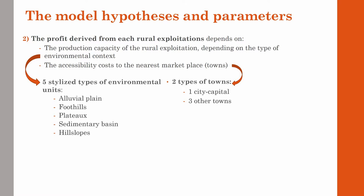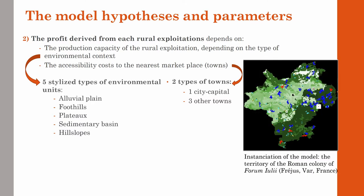Therefore, in the model the aristocrats must have at least one exploitation within a radius of 10 km from the capital. In order to define and calibrate these parameters, we instantiated the model in a specific spatial and chronological context: the territory of the Roman colony of Forum Ulii, present-day Fréjus in southeast France, where we collected and studied archaeological and paleo-environmental data for more than 20 years.